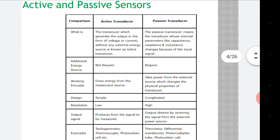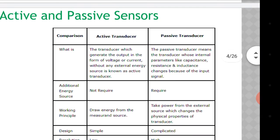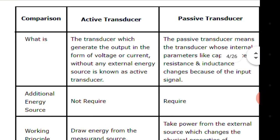Let us talk about active sensors and passive sensors. What is an active sensor? It is a transducer which generates the output in the form of voltage or current without any external energy source. It is known as an active transducer. In the case of an active transducer, there is no external energy source required.